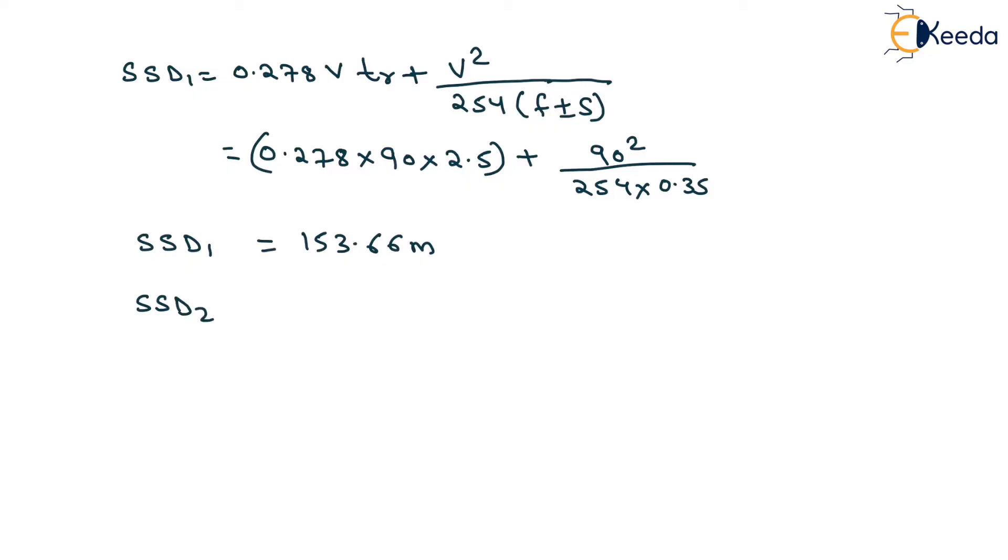Now we will compute the value of SSD2, which will be equal to 0.278V times TR plus V squared divided by 254F plus or minus S. The speed of the second vehicle is 60 kmph, so it will be 0.278 times 60 times 2.5 plus 60 squared divided by 254 times 0.35. After solving this, we get 82.2 meters.